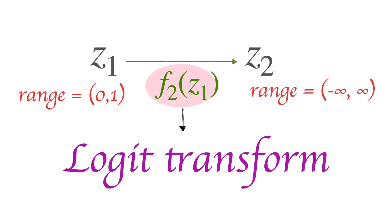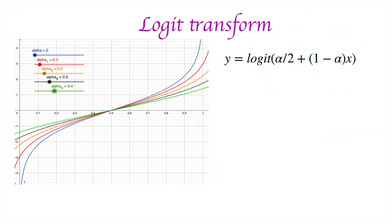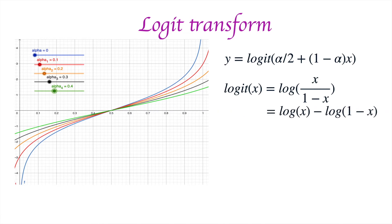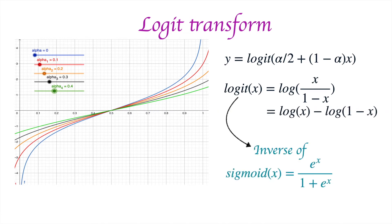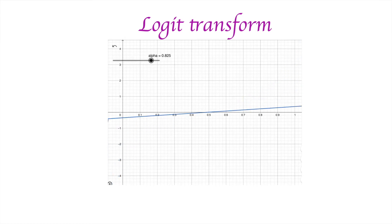The function we'll be using here is called a Logit Transform, and it is parameterized by a variable alpha. Here you can see how it varies for different values of alpha. The formula is quite straightforward: it is simply the logit of X scaled and shifted by values which depend on alpha. Logit is defined as log(X / (1 - X)), which is nothing but the inverse of the sigmoid function. When alpha equals 0, this function is the same as the inverse sigmoid, and as alpha approaches 1, this function approaches the constant 0.